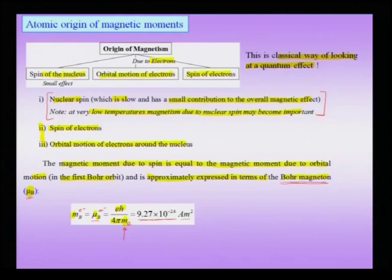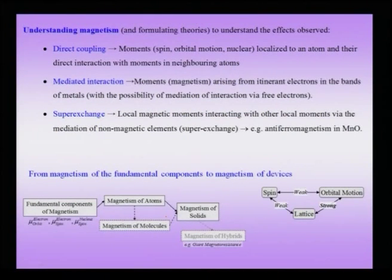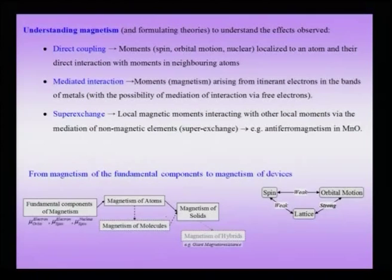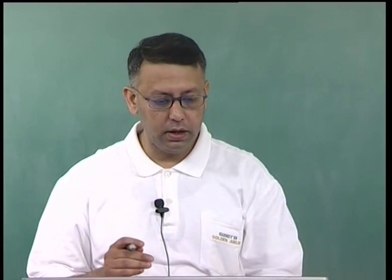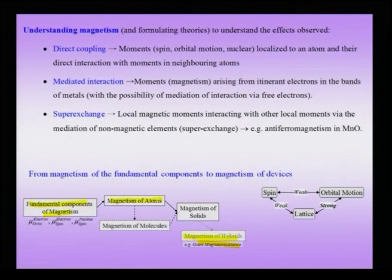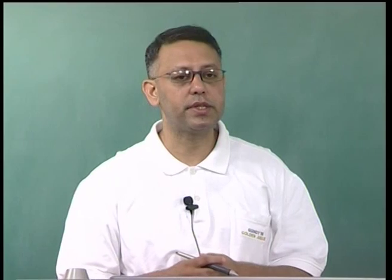Starting from atomic magnetic moments, we want to understand magnetism in bulk materials like polycrystalline iron or even hybrids. We want to traverse from fundamental components — orbital and spin motion of electrons — upward to atoms, then molecules, then solids, and finally hybrids. This is a very difficult journey, and many steps cannot be covered in this course.